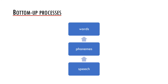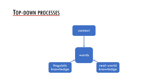Obviously in reality it is not that simple, and there are various models of how this process actually works. Here we have a schema of the top-down processes, and we may distinguish three main sources of information we might employ.